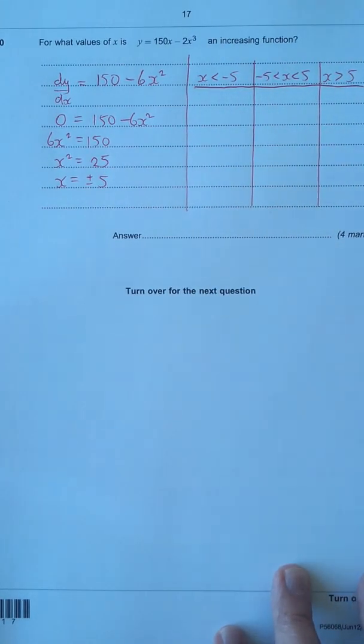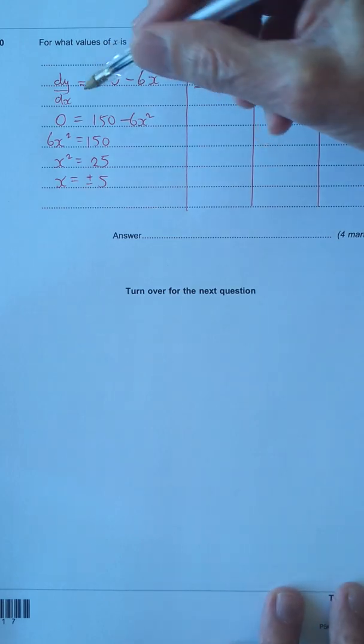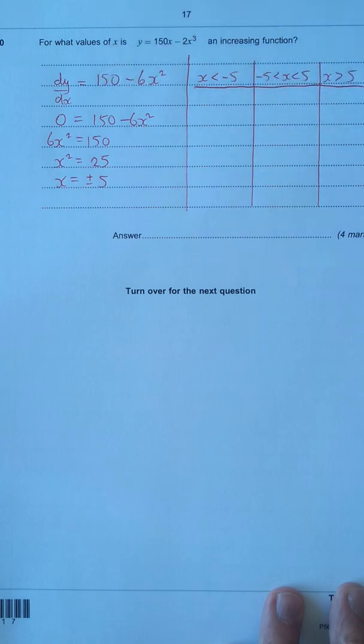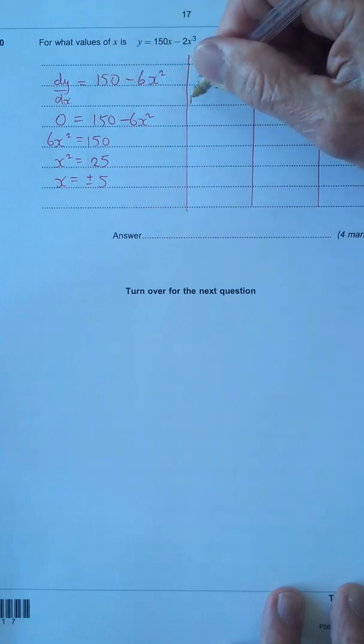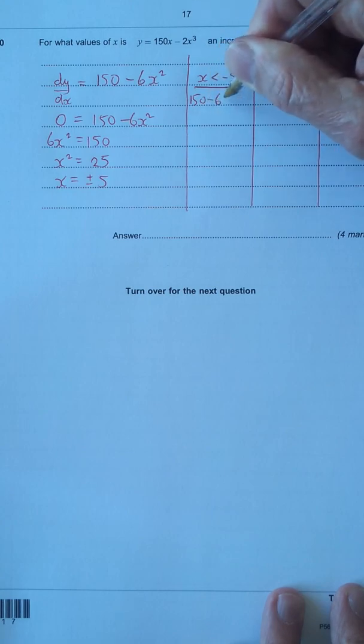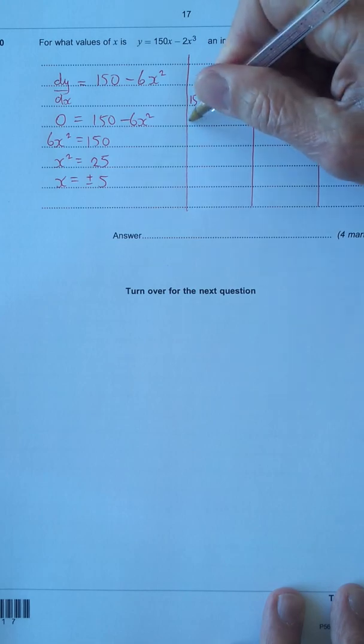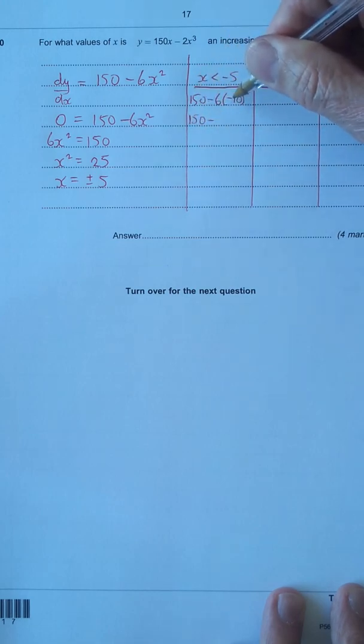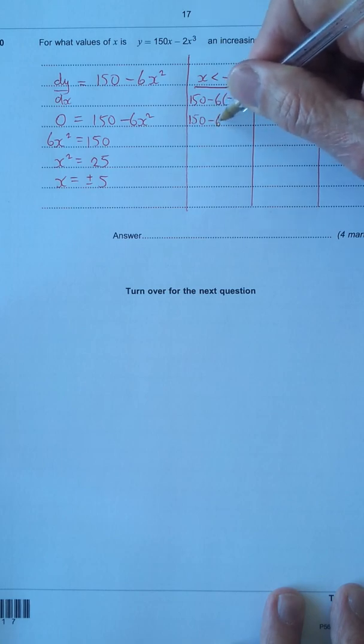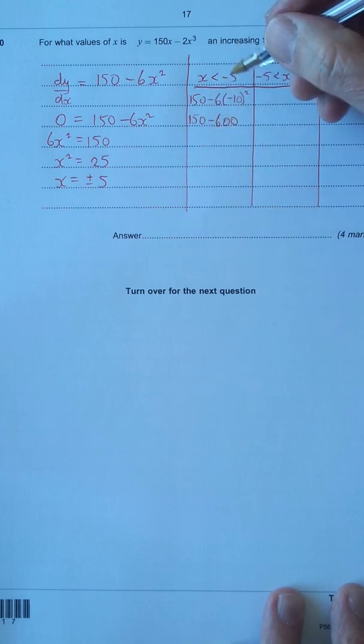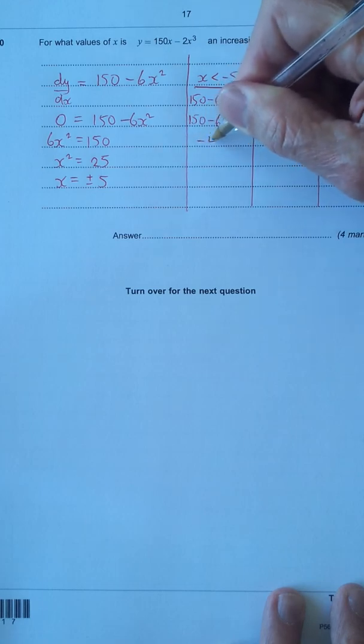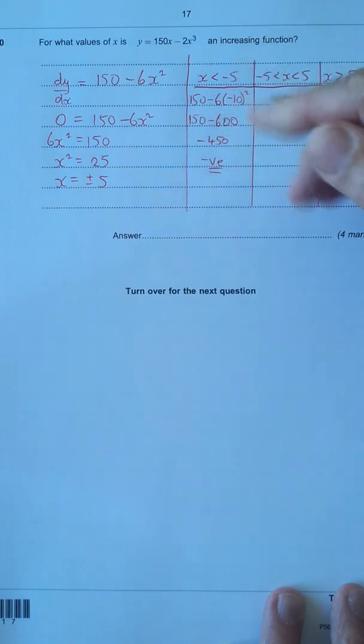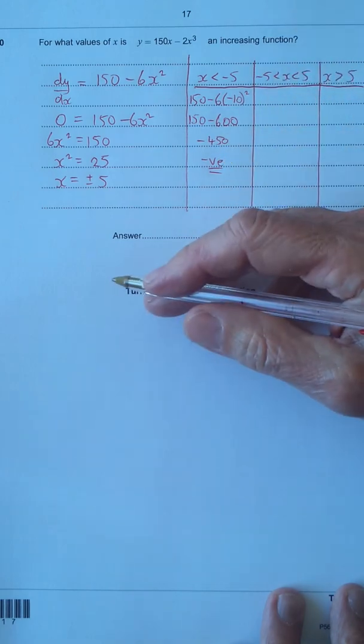Let's choose a nice easy value less than negative 5 that we can substitute into the differential. I'm going to choose negative 10 because it looks quite easy to work out. So we put negative 10 into here, so we've got 150 minus 6 times negative 10 squared. 150 minus 10 tens or 100, minus times a minus is a plus, so that's 100, and then times by minus 6 is minus 600. We don't actually have to work the value out, all we know is whether it's positive or negative, but I will work it out anyway. That's minus 450, which is negative. If it's negative, that is not increasing, that is decreasing, so it's not that one.